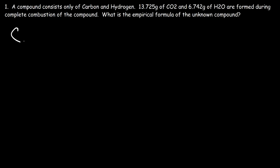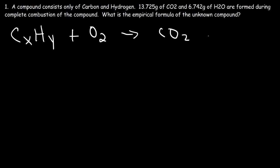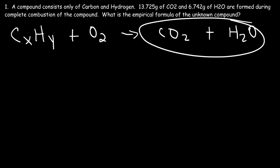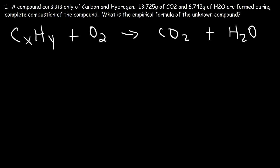We have a hydrocarbon — a molecule that only contains carbon and hydrogen — and it's undergoing combustion. In a combustion reaction, the hydrocarbon reacts with oxygen gas from the air and produces carbon dioxide and water. We're given the mass of the products, and in order to find the empirical formula we need to find the number of moles of carbon and hydrogen found in the compound.